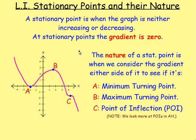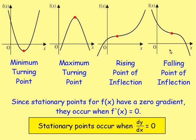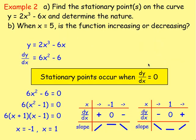We then looked at stationary points and their nature. Stationary points are where the gradient is zero, and you could have one of four options: a minimum turning point, a maximum turning point, a rising point of inflection, or a falling point of inflection. With a rising point of inflection, the gradient is positive just before, zero at the point, and positive again just after. A falling point of inflection would be decreasing, then zero, then decreasing again. Stationary points occur when dy by dx equals zero.